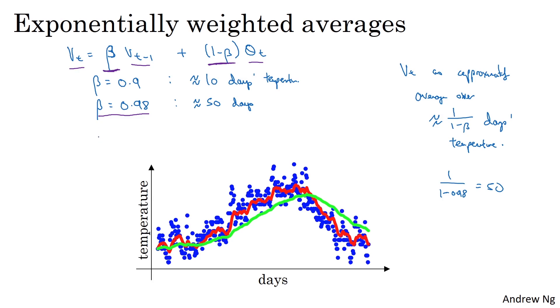Now let's try another value. If you set beta to another extreme, let's say it is 0.5, then this by the formula we have on the right, this is something like averaging over just two days temperature. And you plot that, you get this yellow line. And by averaging only over two days temperature, it's as if you're averaging over a much shorter window. So you're much more noisy, much more susceptible to outliers. But this adapts much more quickly to have the temperature changes.